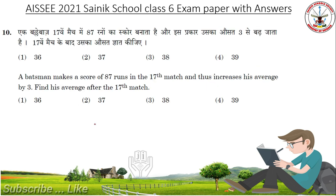A batsman makes a score of 87 runs in the 17th match and thus increases his average by 3. Find his average after the 17th match. Answer: 39.